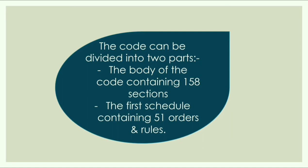The code can be divided into two parts: the body of the code containing 158 sections, and the first schedule containing 51 orders and rules. Section 2 contains 20 definitions.